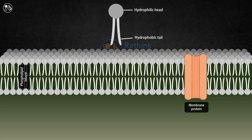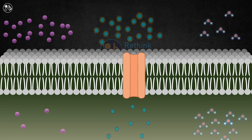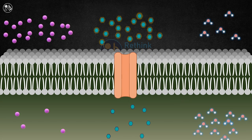There are three types of passive transport: simple diffusion, facilitated diffusion, and osmosis.